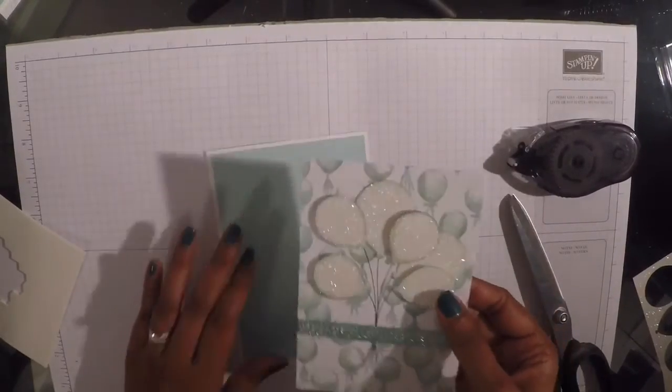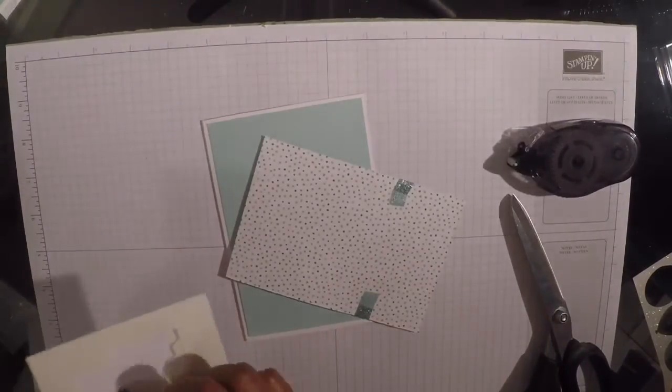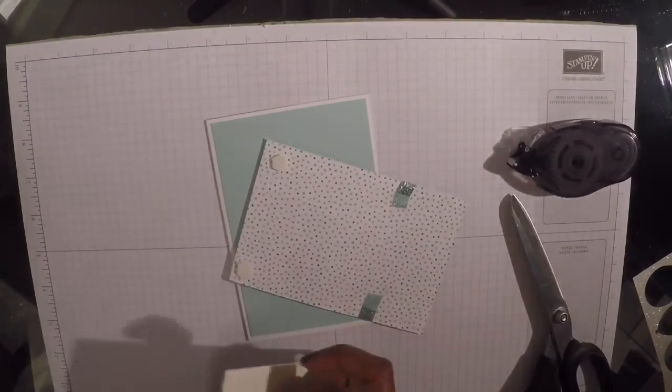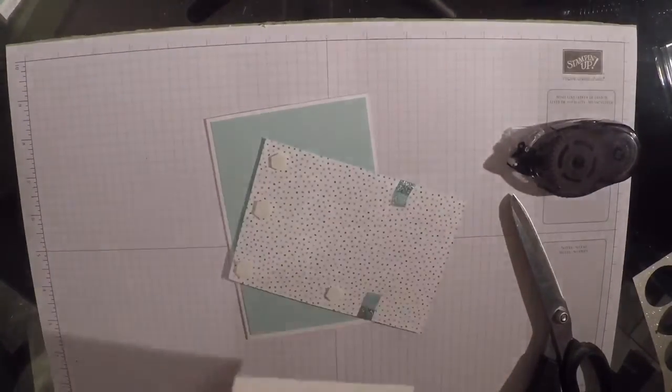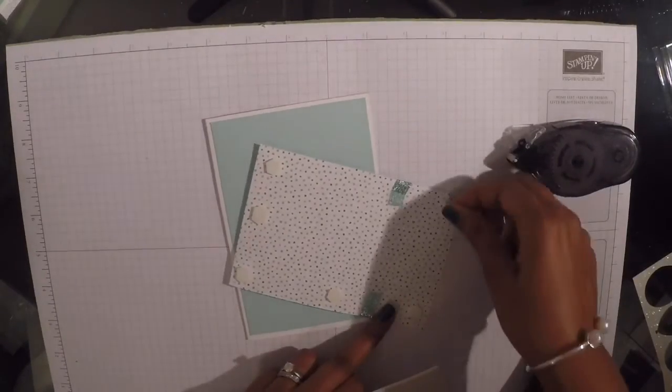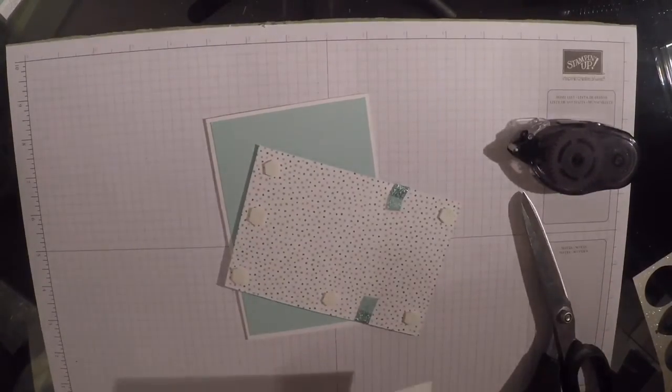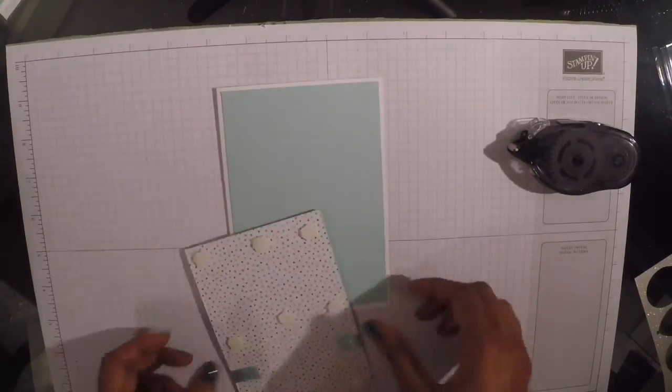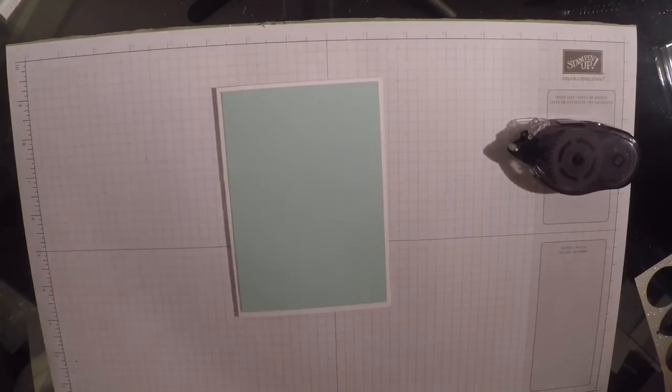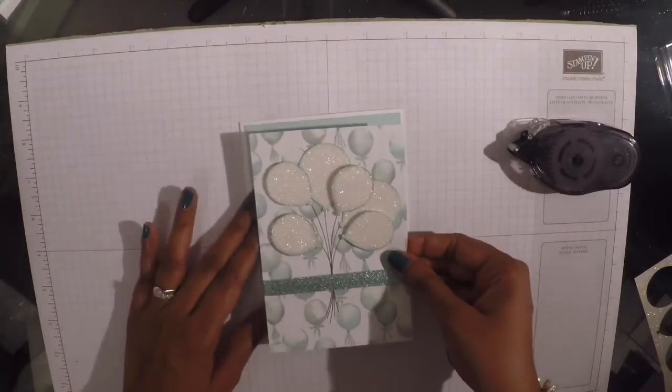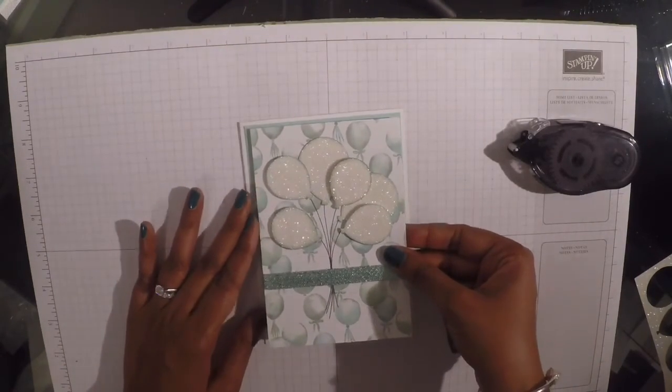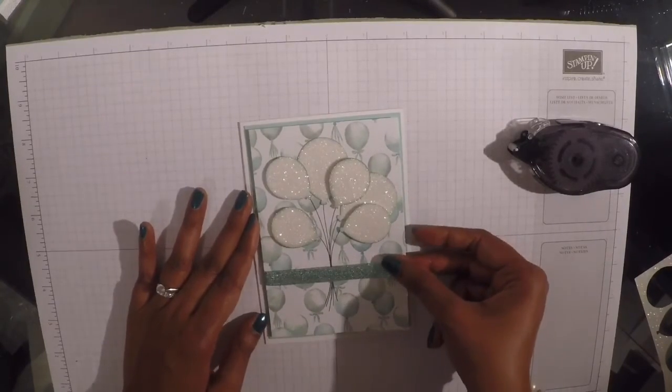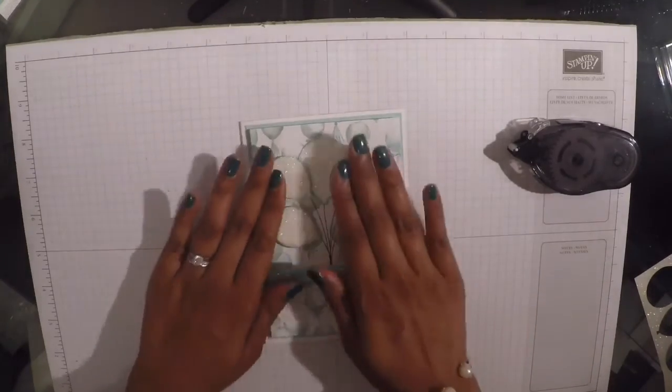And then I'm going to pop this one, this layer, this top layer up on dimensionals. And then I'm going to remove all the backings. And then you can just place that one evenly on the top of the Pool Party layer.